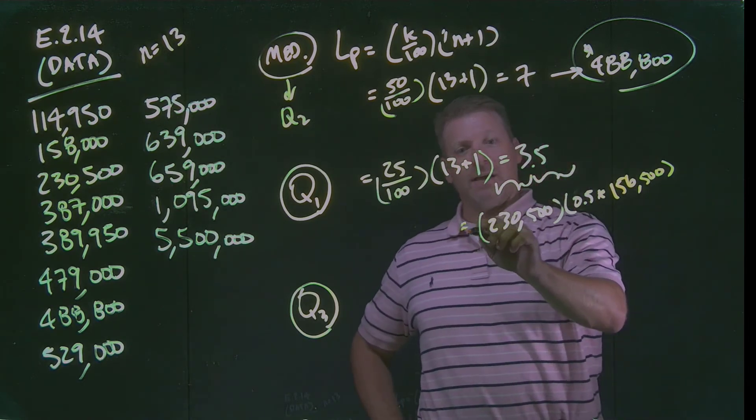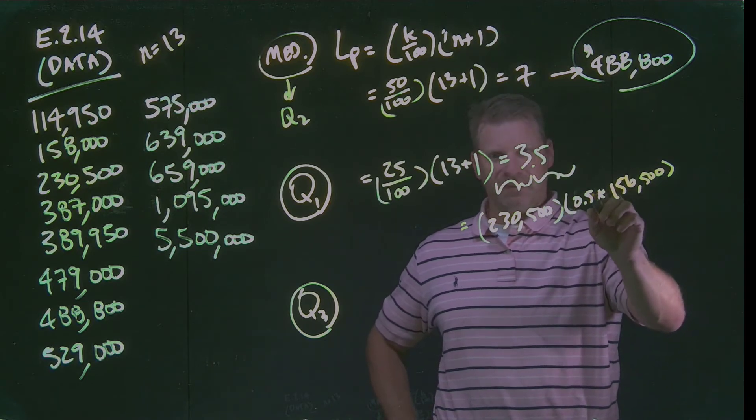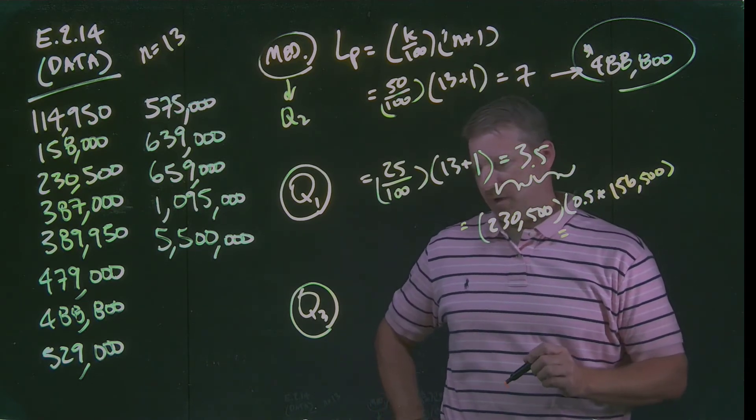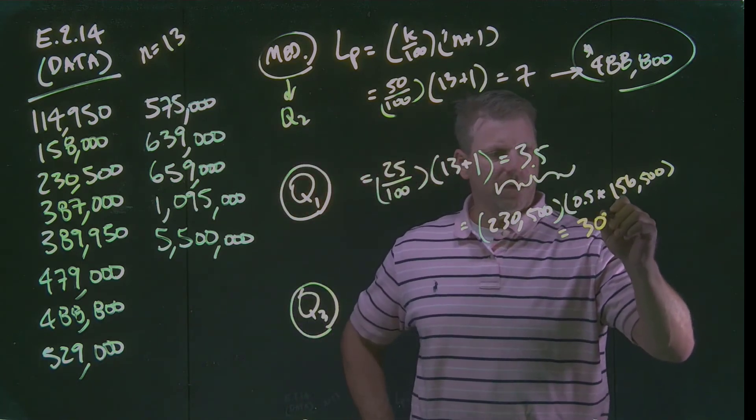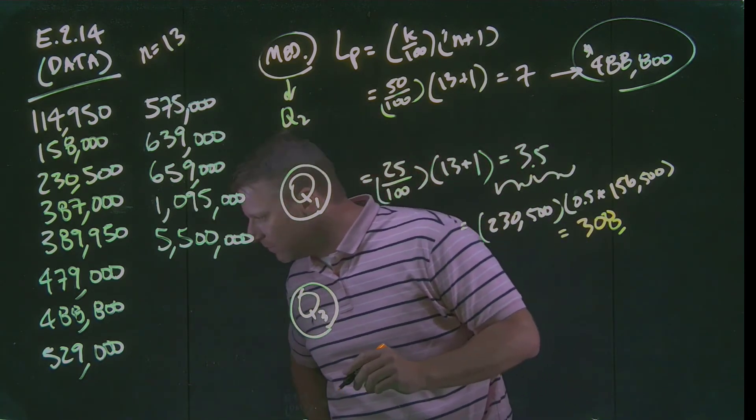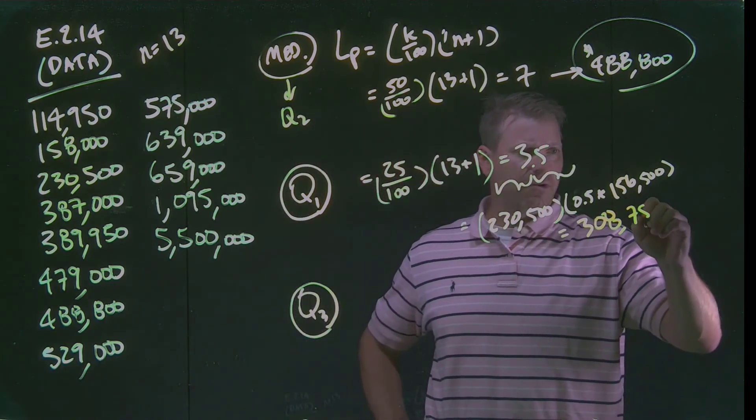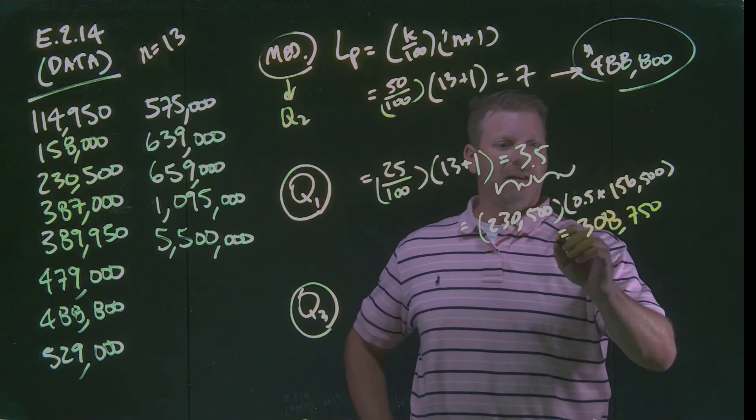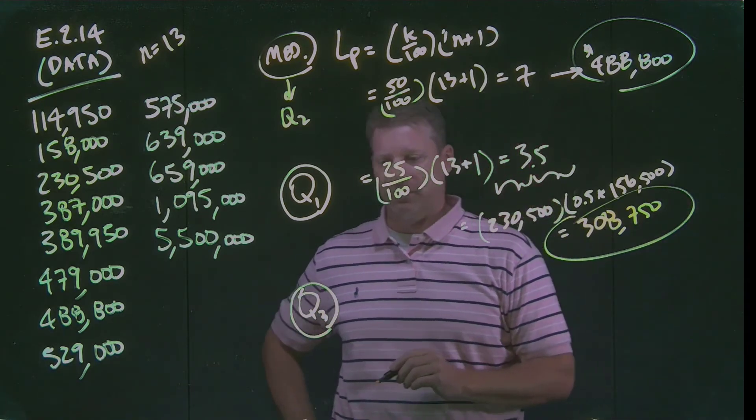If I do the math on that and I add that back to my $230,500 plus half of this distance, I end up with my first quartile value right around $308,750. That then tells me where the location is for my first quartile boundary.